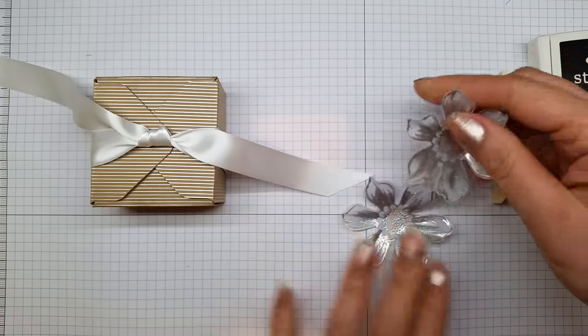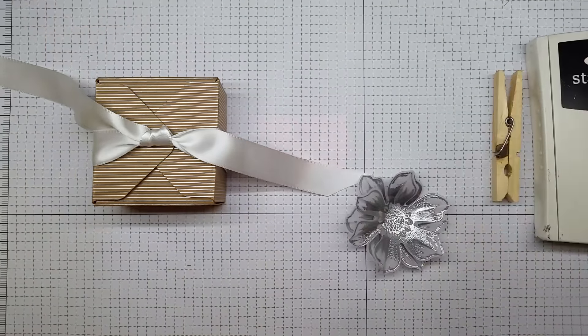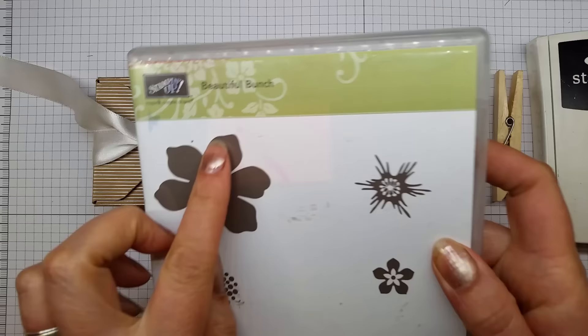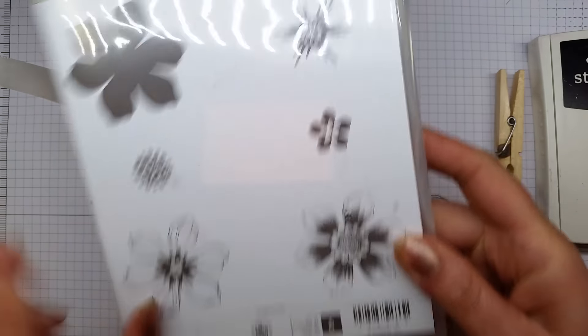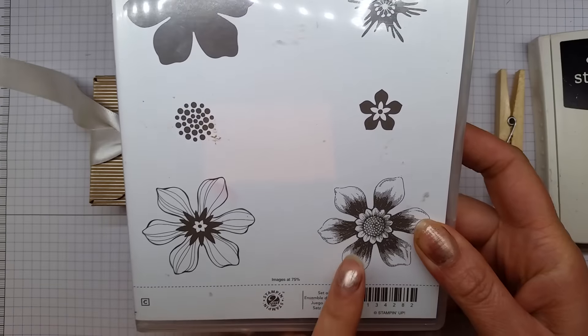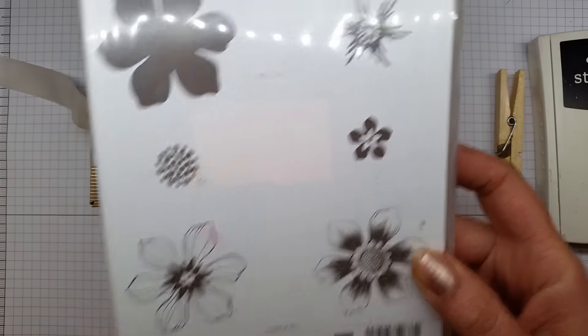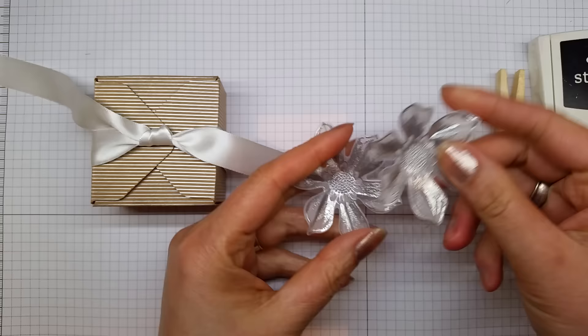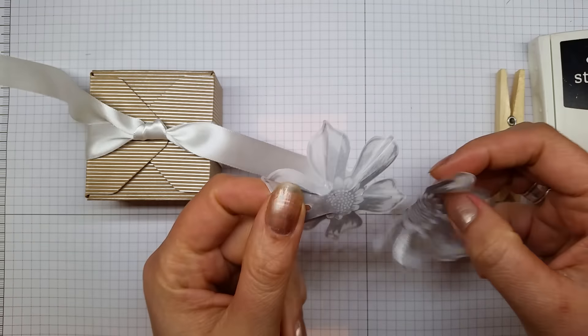I've already stamped, embossed, and cut out these flower images. I use the beautiful bunch flower set. I stamped with Versamark ink, threw silver embossing powder over it, heated it up, and then ended up with this.